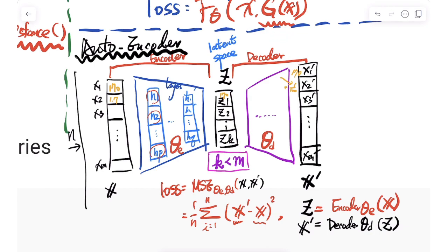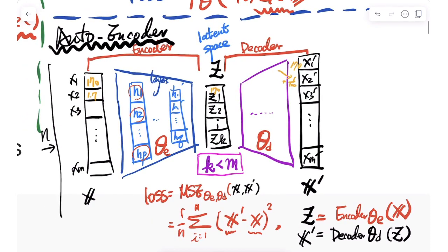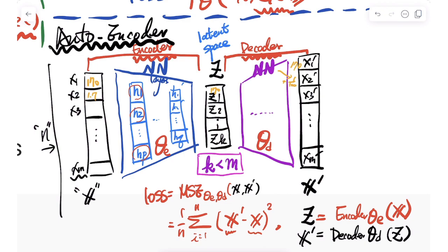Looking at the autoencoder structure from left to right: at the beginning we have n data points, each with m features, forming big X. The autoencoder structure is divided into two separate networks — the left side is the encoder and the right side is the decoder.